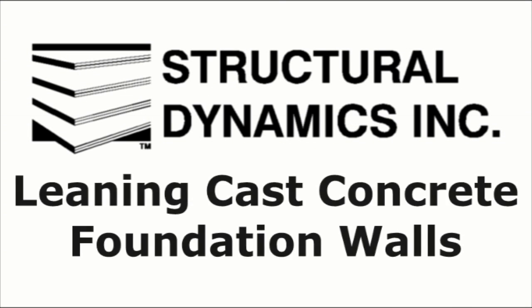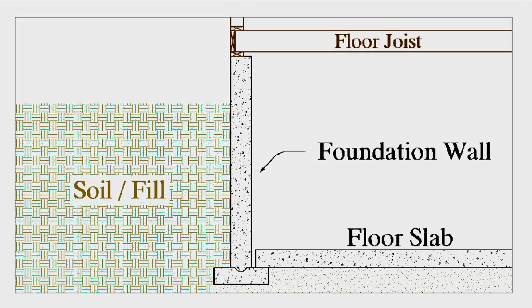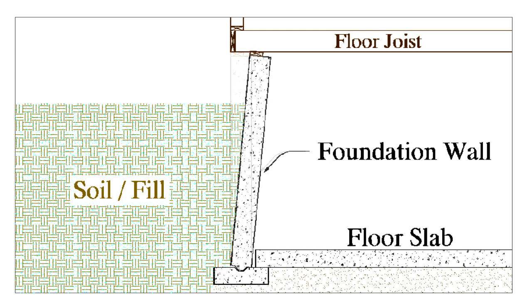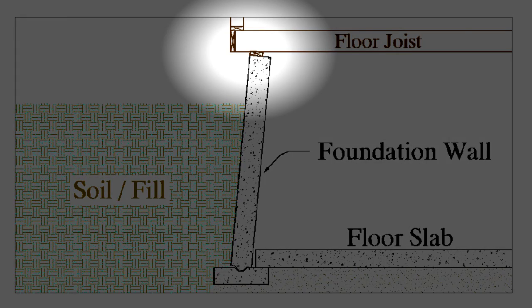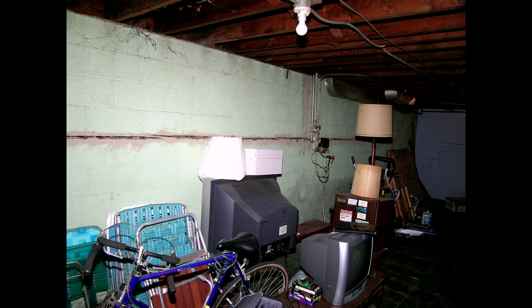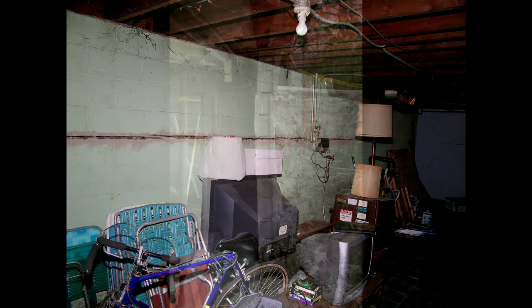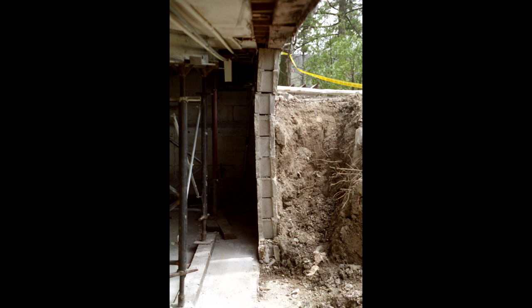In this video we will be discussing tilting or leaning of cast in place concrete foundation walls. This is completely different than inward bowing and cracking of concrete block foundation walls. Cast in place foundation walls typically tilt inward under lateral soil pressure because of a failed connection along the top of the foundation wall, whereas concrete block foundation walls bow inward and develop numerous cracks because the block wall itself does not have adequate strength to resist the lateral earth pressure.